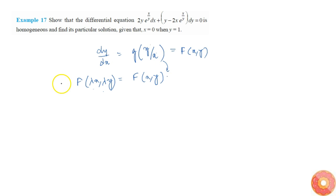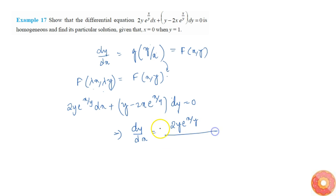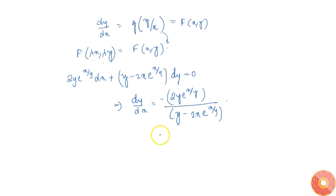Now let's bring the equation into g(y/x) form. The equation becomes 2y·e^(x/y) dx + (y − 2x)·e^(x/y) dy = 0, which implies dy/dx = 2y·e^(x/y) divided by the quantity −(y − 2x·e^(x/y)).